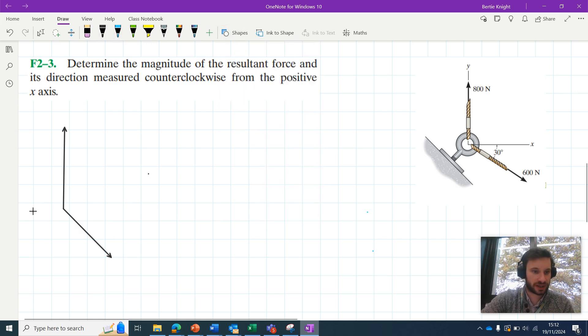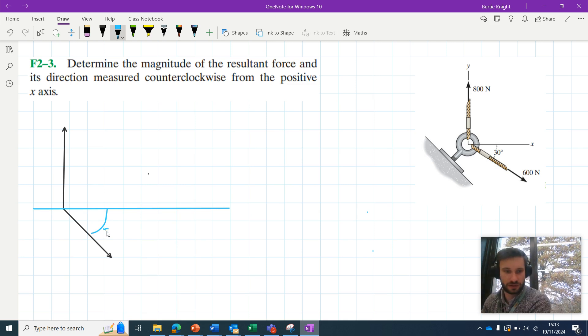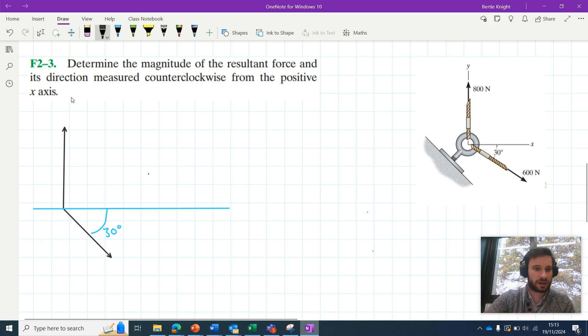Let's add our x-axis here, and let's add this 30 degree angle. And let's just add our magnitudes. So I've got this 800N force and this 600N force here.